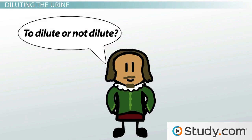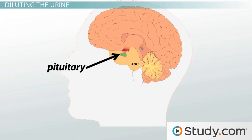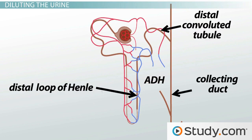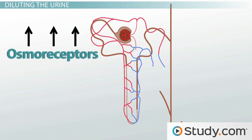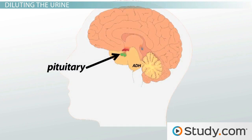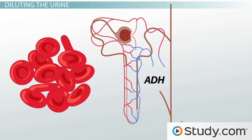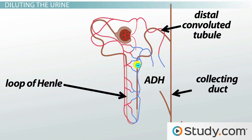So, to dilute or not dilute? Your body has the answer — it's called ADH. ADH is a hormone released to further concentrate the dilute filtrate passing out of the distal loop of Henle and moving through the distal segments of the distal tubule and the collecting duct. If osmoreceptors — cells that monitor the osmolality or solute concentration in blood — sense an increase in the osmolality of your blood, ADH will be released to conserve more water in the body so that the water can dilute the blood back down to a normal concentration. ADH accomplishes this by forcing the distal convoluted tubule and collecting ducts, normally impermeable to water, to now absorb water from the dilute filtrate passing out of the loop of Henle.